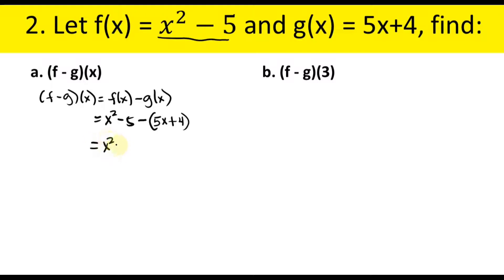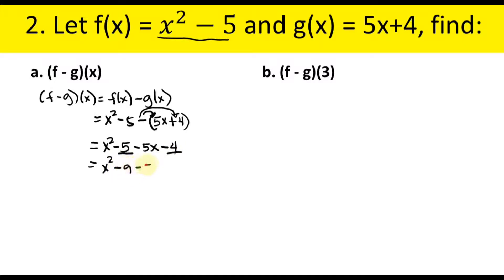Copy the first expression: x squared minus 5. Then distribute the negative sign: negative times 5x gives negative 5x; negative times positive 4 gives negative 4. Combine like terms: negative 5 and negative 4 gives negative 9. Arrange the answer: x squared minus 5x minus 9.